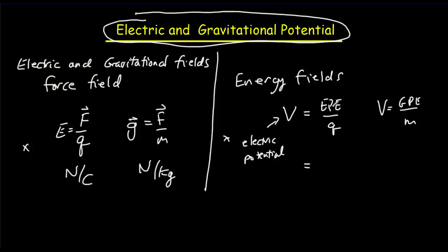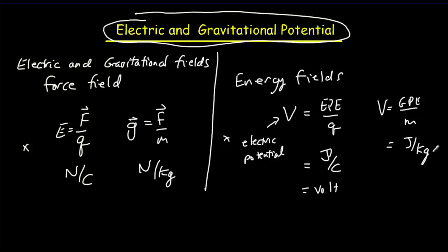The units are going to be energy per charge — joules per coulomb. A joule per coulomb has another name: it's called a volt. Similarly, for the gravitational potential, we'd have units of joules per kilogram, and we don't have a special name for a joule per kilogram.